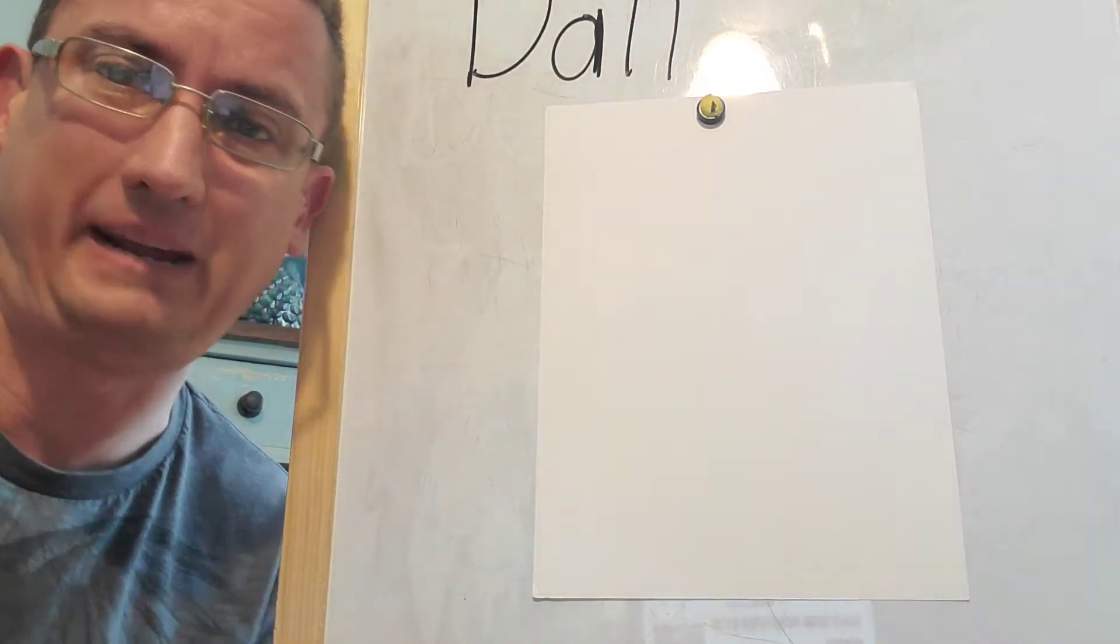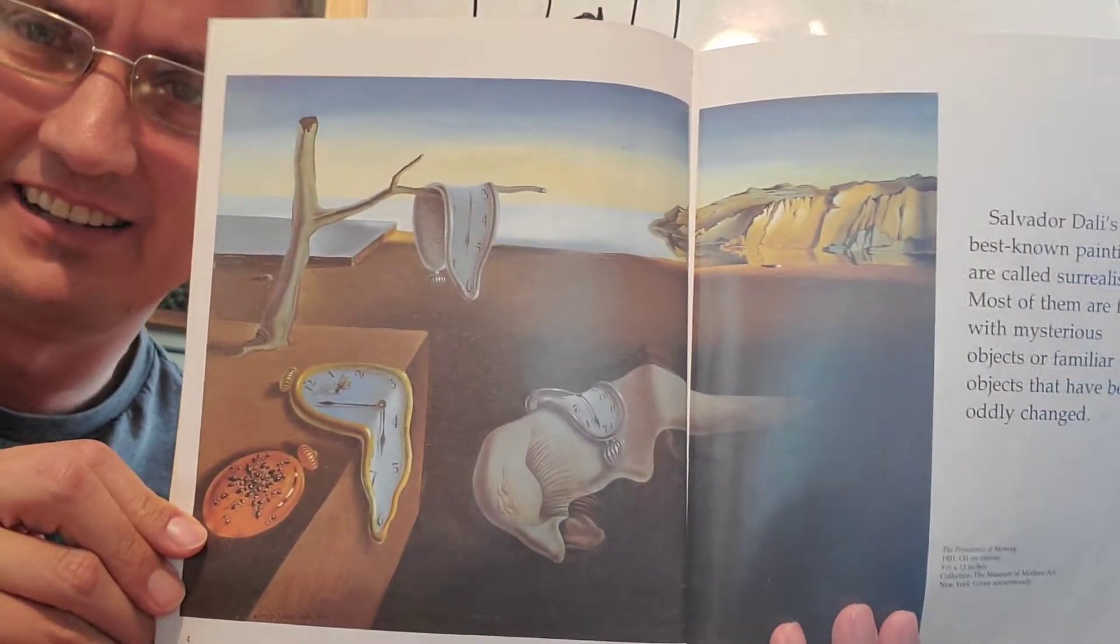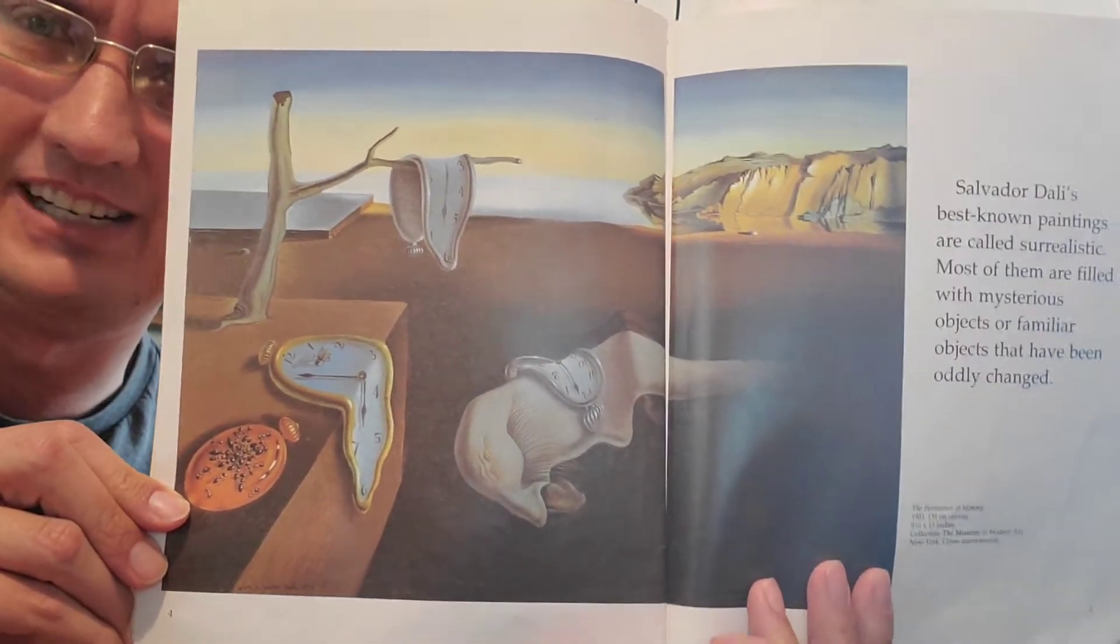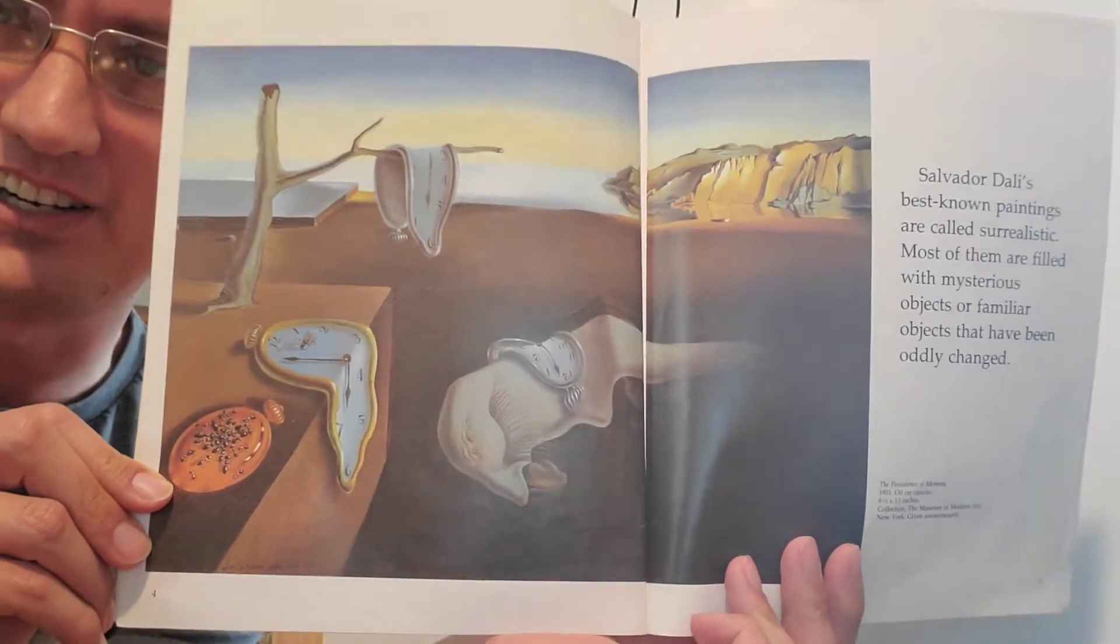One of Salvador Dali's most famous paintings was this one right here. And as you can see, there's some very strange things going on. Remember his style was called surrealistic. And look at those clocks. Those clocks are melting clocks.